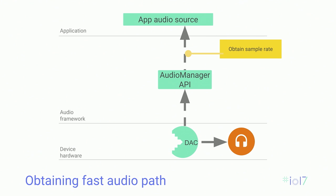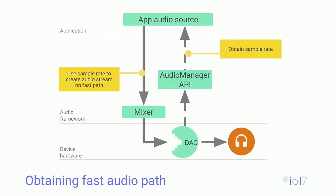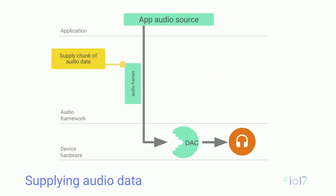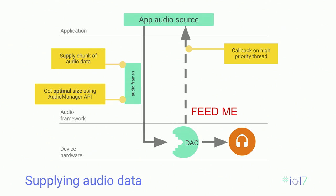To use the fast mixer path: first, obtain the correct sample rate using the Audio Manager API — DACMAN wants his food at a specific rate. Second, don't add any effects. Once the audio stream is created, you need to supply audio data in a specific chunk size, which you can also obtain via the Audio Manager API. After the first chunk is consumed, DACMAN sends you a callback on a high priority thread, allowing you to do your audio processing work without being preempted. Every callback has a deadline — you must send audio data at very specific intervals. If you miss the deadline, DACMAN outputs silence in protest.